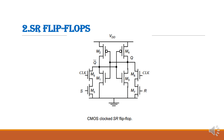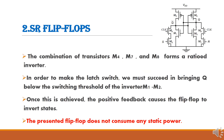This is the circuit diagram for a CMOS clocked SR flip-flop, where the clock signal and inputs are provided through the extra four transistors M1, M2, M3, and M4 as cross-coupled inverters, with extra transistors for the S input, R input, and clock inputs. The combination of transistors M4, M7, and M8 forms the ratioed inverter. In order to make the latch switch, we must bring the Q value below the switching threshold of inverters M1 and M2. Also, this clocked SR flip-flop does not consume any static power, which is its main advantage.